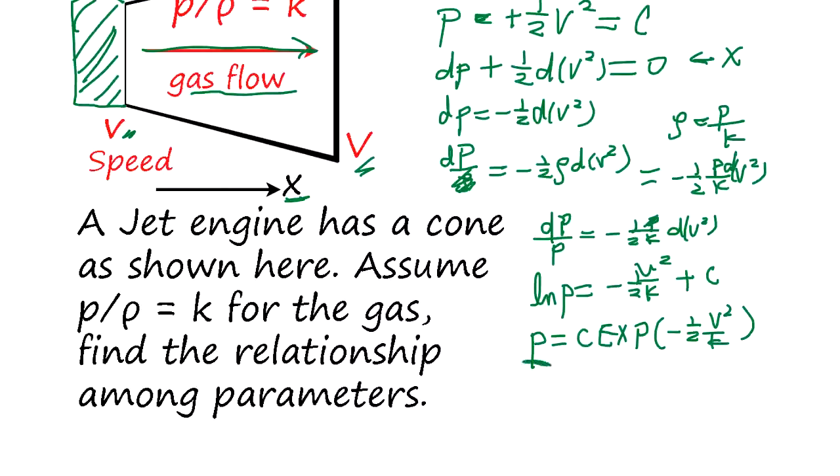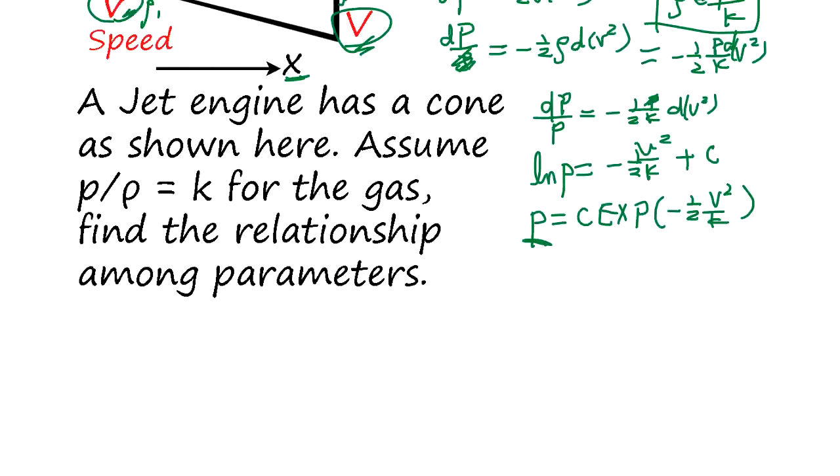Now this P, say this side is P1, this side is P2. The ratio P2 over P1 is simply exponent minus 1/2K times (v² minus V²).